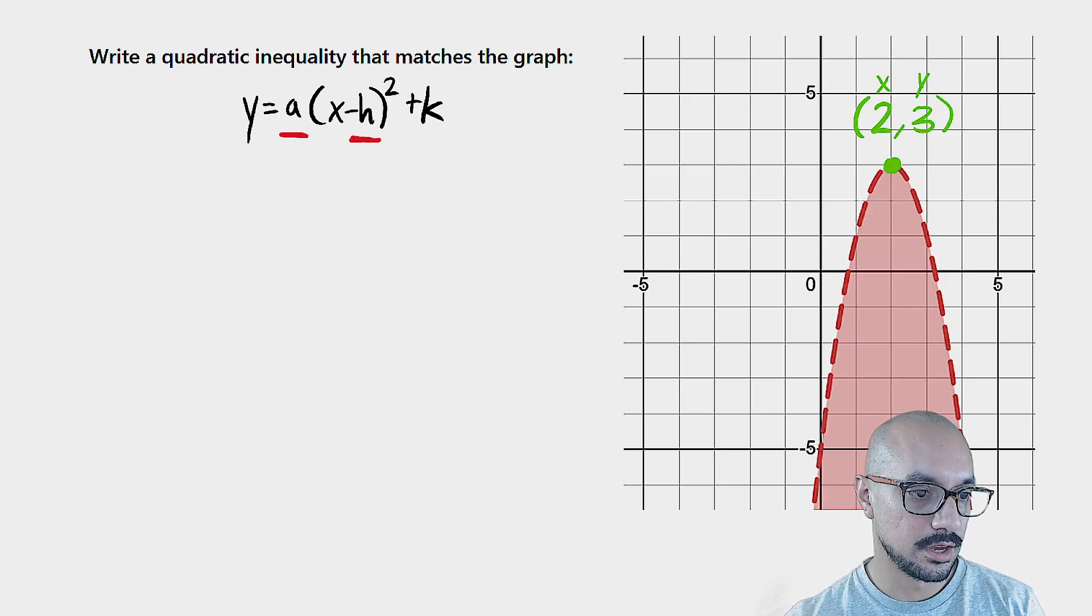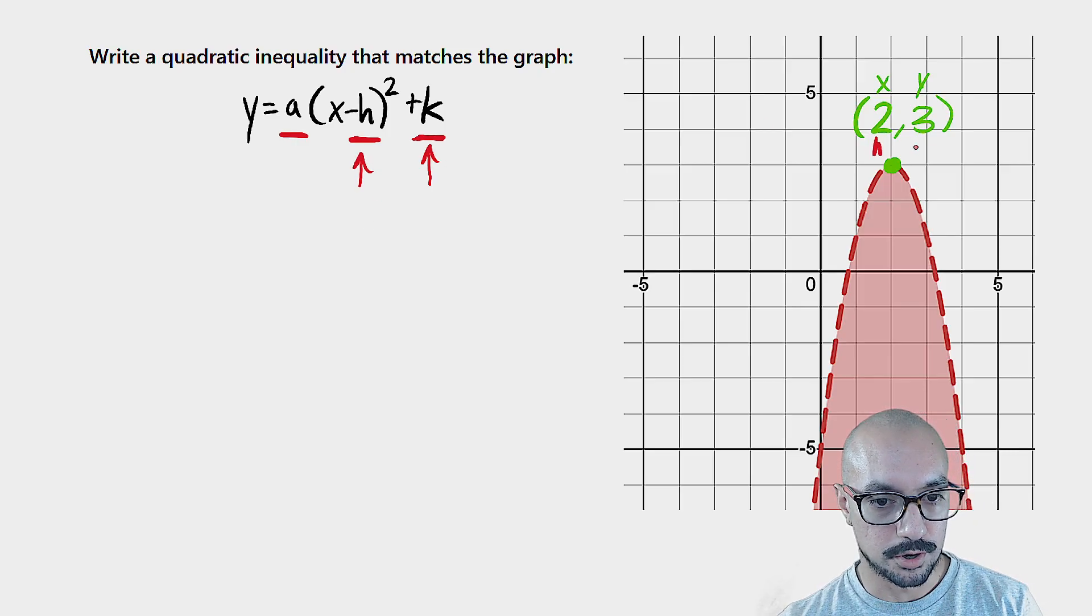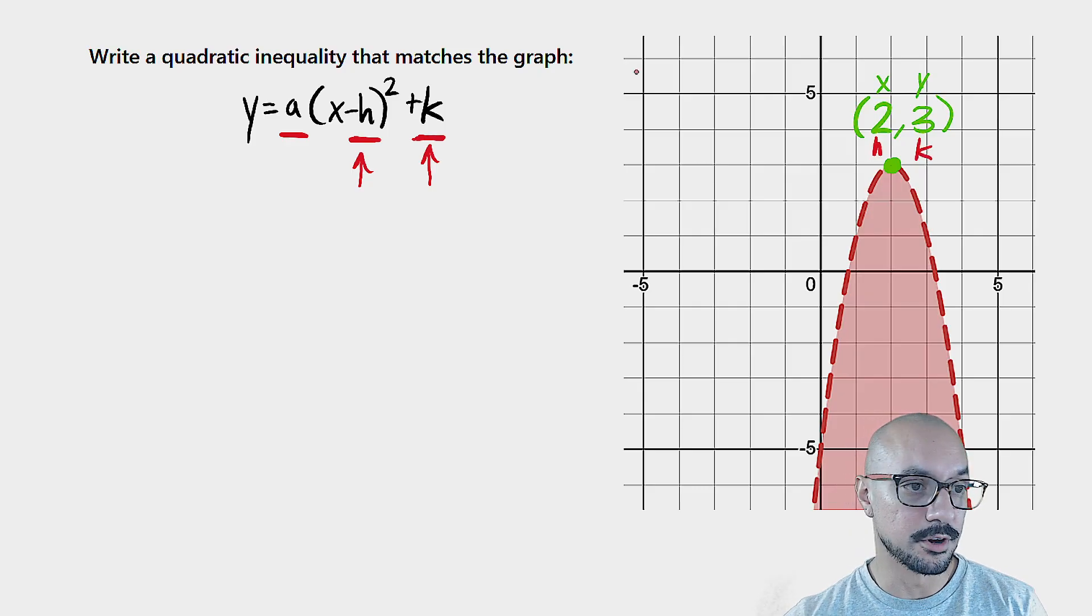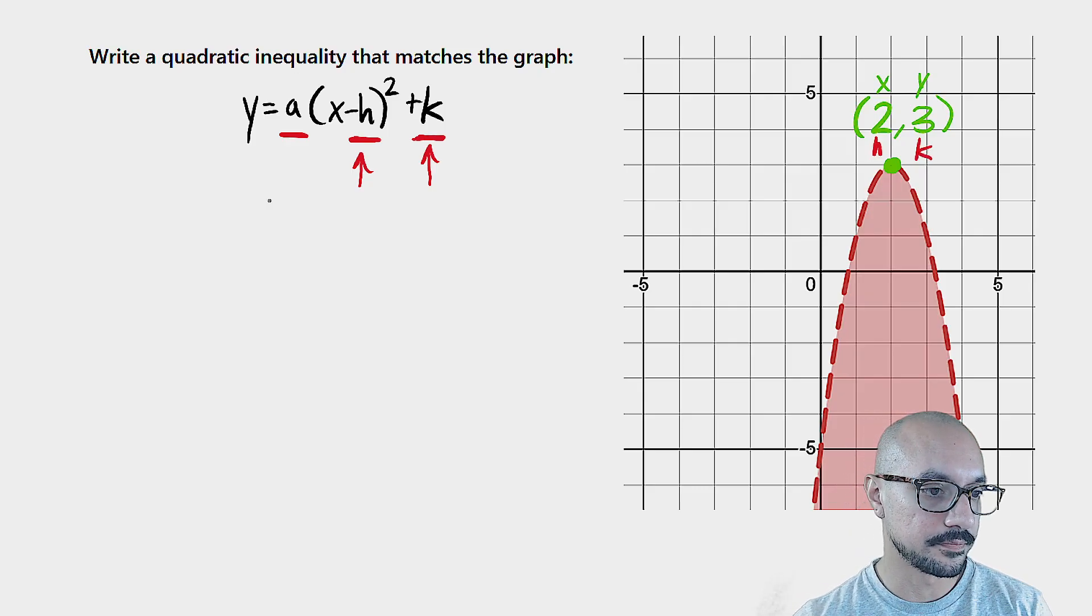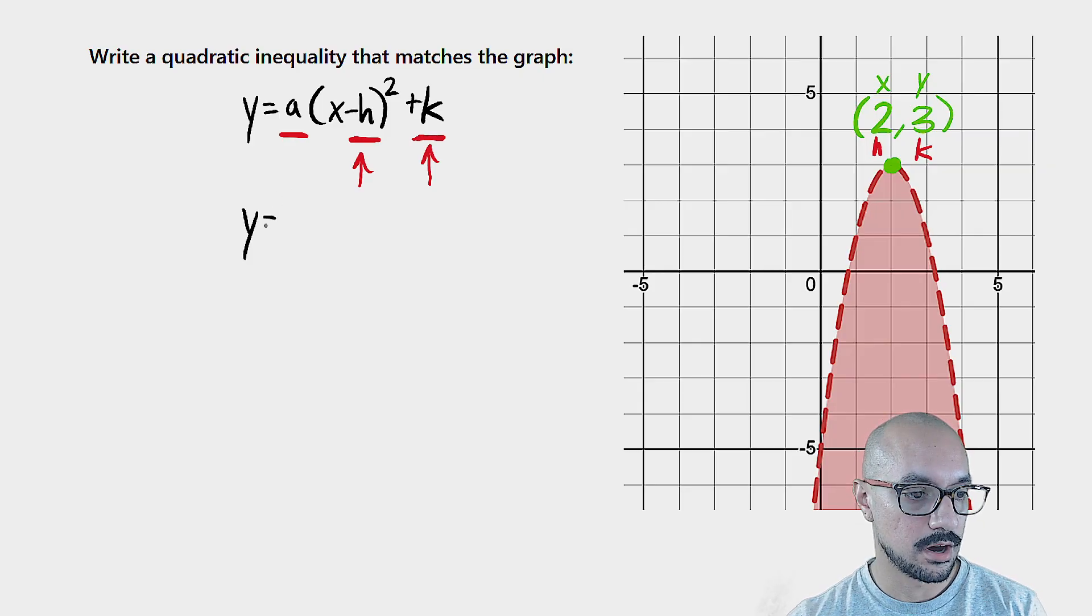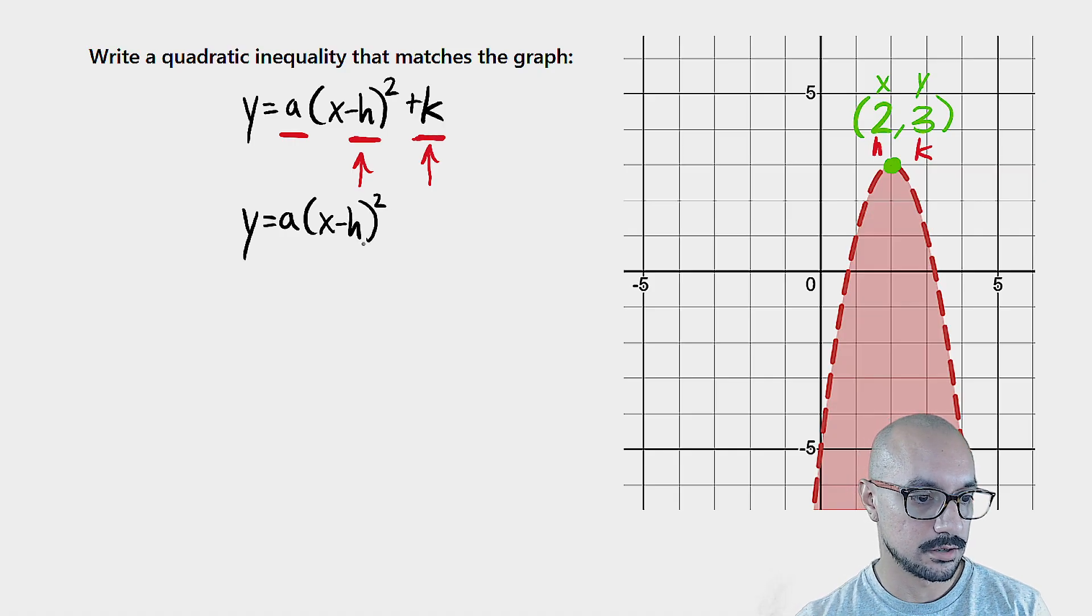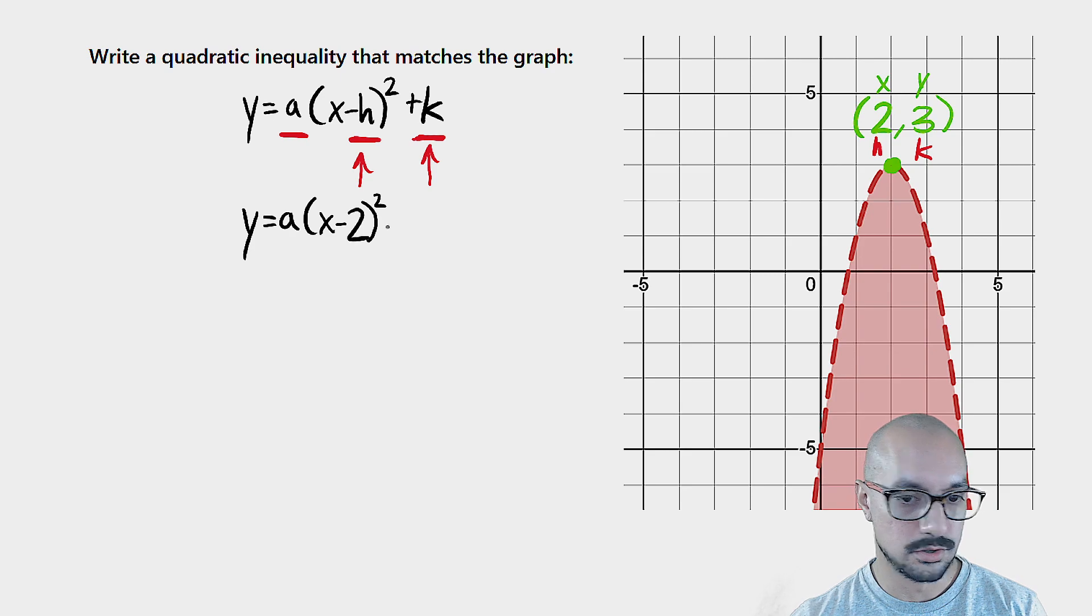I need the value of a, value of h, the value of k, and we just found two of them. We just found h and k. Those are over here. We grabbed them from the graph and they're pretty straightforward to find. Let me go ahead and fill those in. y equals a times the quantity x minus 2 squared plus 3.